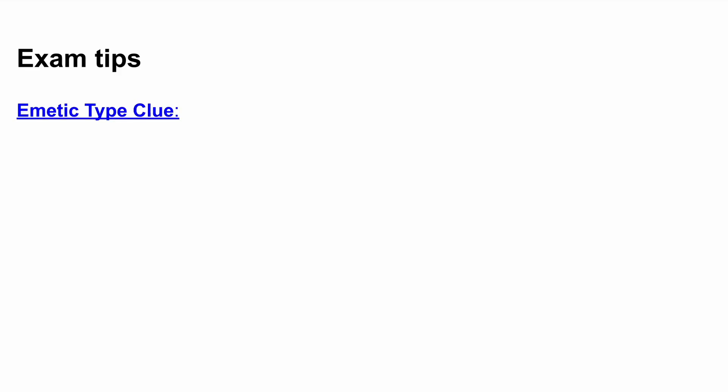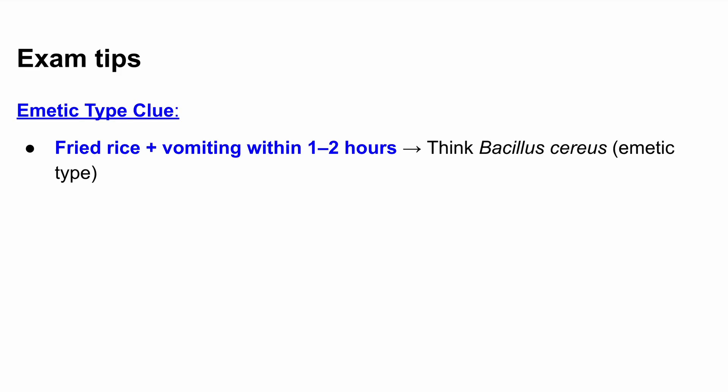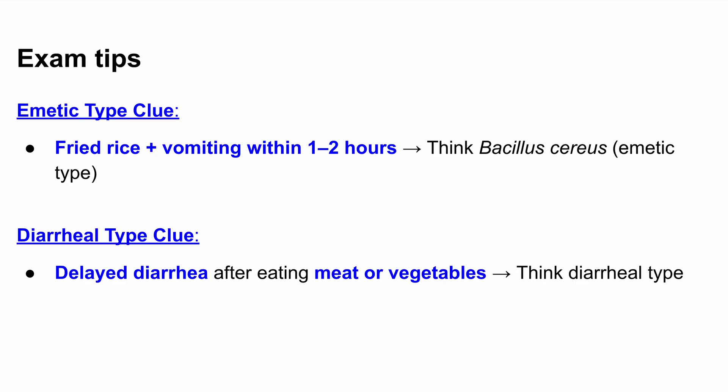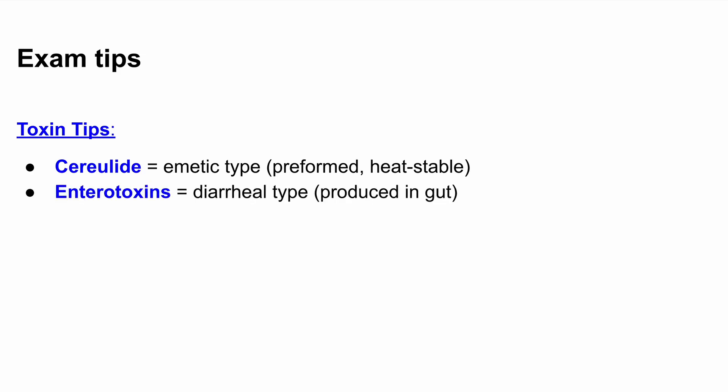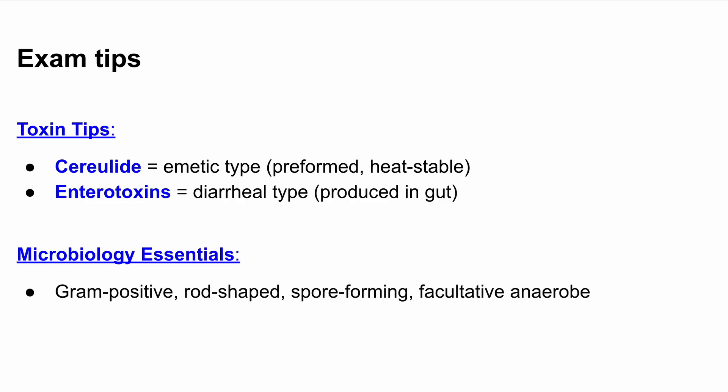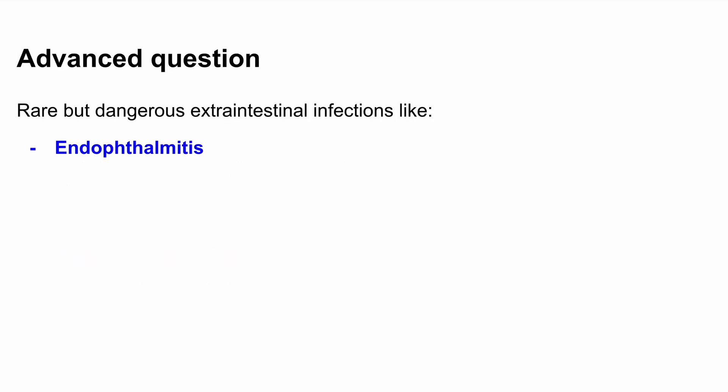A few more exam tips: 1) If a question mentions a patient who ate fried rice followed by vomiting within one to two hours, think Bacillus cereus emetic type — the key clue is the timing and the food. 2) If symptoms are more delayed and involve diarrhea with a history of eating meat or vegetables, lean toward the diarrheal type. 3) Know your toxins: cerelide for the emetic type — preformed and heat-stable; enterotoxins for the diarrheal type — produced inside the gut. 4) Gram-positive, rod-shaped, spore-forming, facultative anaerobe — tie these microbiology terms to the image of Bacillus cereus for easier recall. Finally, don't forget the rare but dangerous extra-intestinal infections like endophthalmitis, endocarditis, or anthrax-like pneumonia caused by certain strains — great for advanced or bonus-style exam questions.